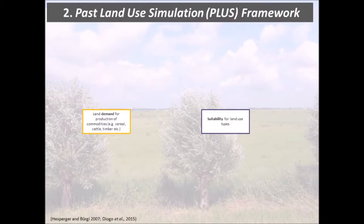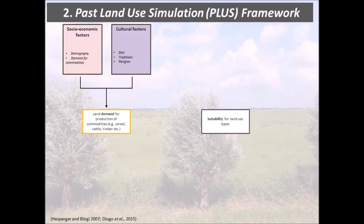The core of this modeling framework that we applied consists of two components. The first one is the demand for land use and the other one is the suitability for land use. To determine the demand and the suitability we applied a conceptual framework derived from contemporary studies of agricultural systems. For the demand we identified socio-economic factors and cultural factors such as demography, demand for commodities, diet, tradition and religion.